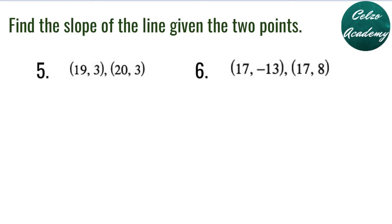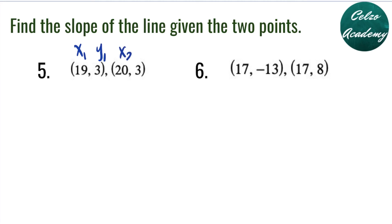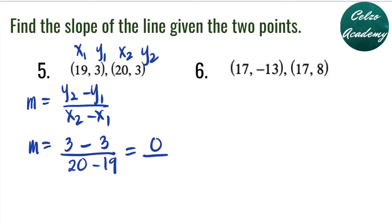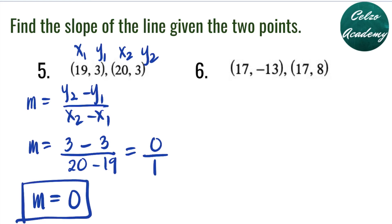Question 5: points (19, 3) and (20, 3). Our first pair is x1, y1; second pair is x2, y2. Plugging into the formula: y2 is 3 minus y1 is 3, over x2 is 20 minus x1 is 19. Simplifying: 3 minus 3 is 0, and 20 minus 19 is 1. Zero divided by 1 is 0, so the slope here is 0. If the slope is 0, that means you have a horizontal line.